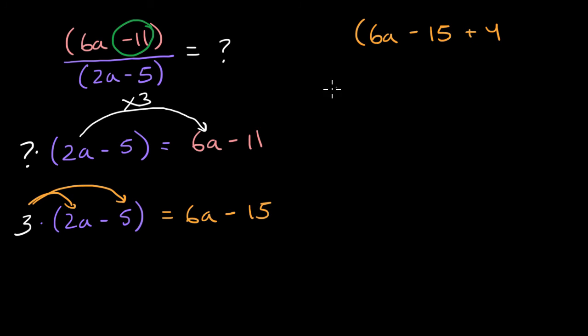I'm just rewriting this negative 11 or the subtracting 11 as the same thing as subtracting 15 and then adding four. And if we write it that way, something very interesting happens. We could also rewrite this as (6a - 15) over (2a - 5) plus four over (2a - 5).